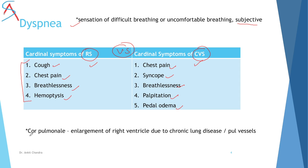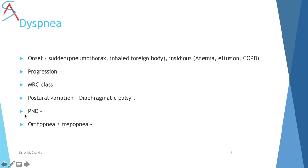I would like to mention cor pulmonale, in which there is right heart failure or right ventricular hypertrophy due to chronic lung disease like COPD or pulmonary vessel disease. Certain chronic respiratory diseases can damage the cardiovascular system in later stages, so you must capture this in your history.